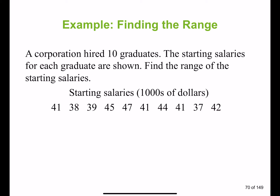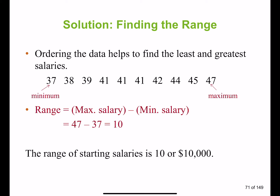A corporation hired 10 graduates. The starting salaries for each graduate are shown — find the range of the starting salary. The salaries are measured in thousands, so the minimum is 38 and the maximum is 47. If you have a large amount of numbers, arrange them in ascending order. The range of starting salaries is ten thousand dollars.